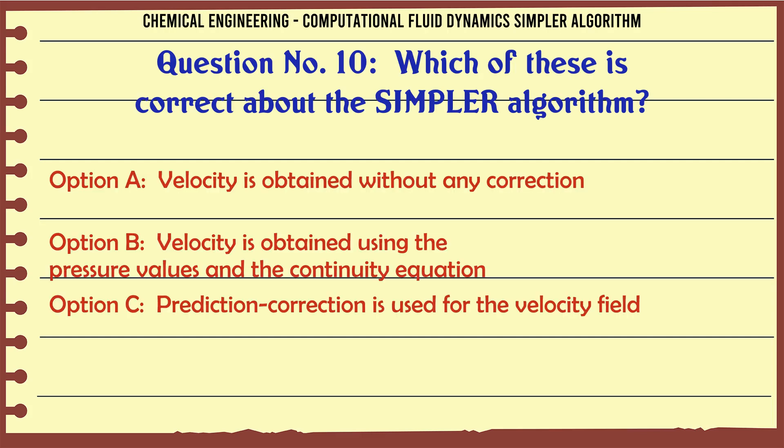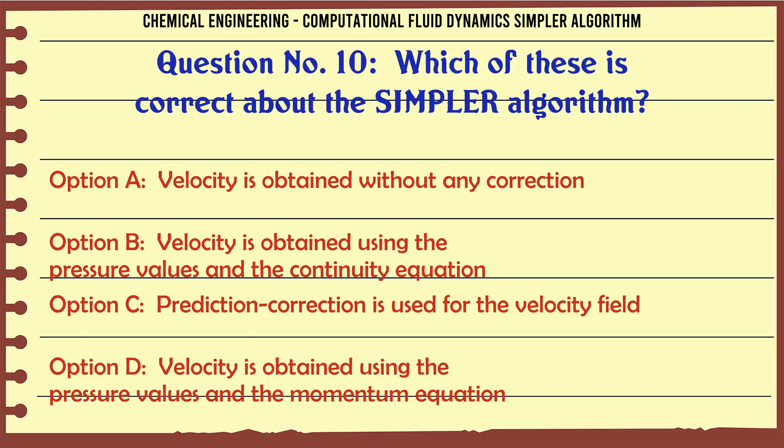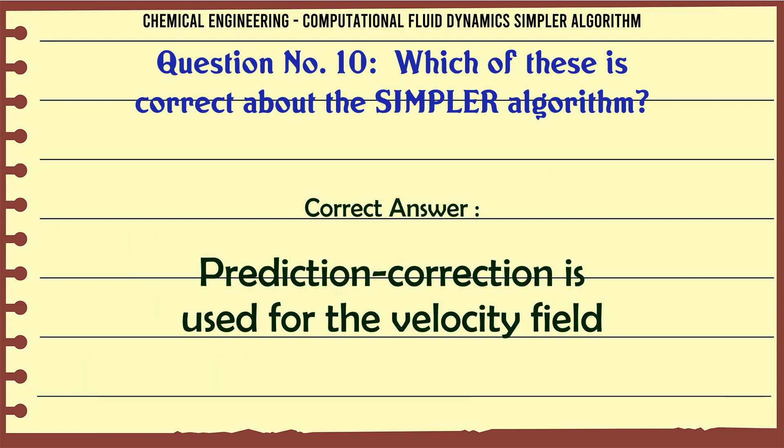Which of these is correct about the SIMPLER algorithm? A. Velocity is obtained without any correction, B. Velocity is obtained using the pressure values and the continuity equation, C. Prediction correction is used for the velocity field, D. Velocity is obtained using the pressure values and the momentum equation. The correct answer is: Prediction correction is used for the velocity field.